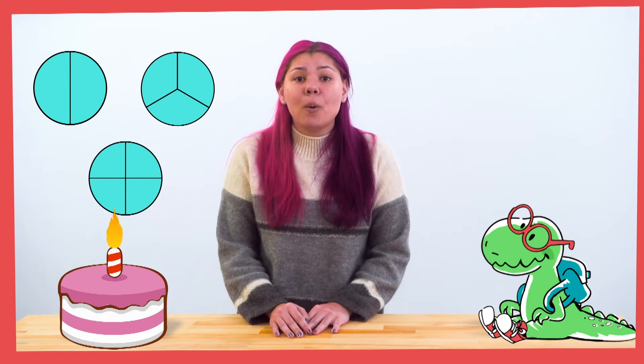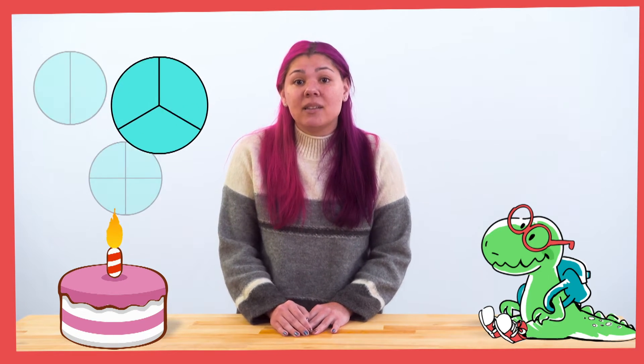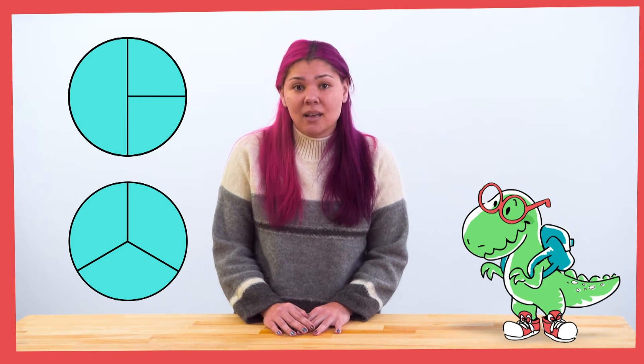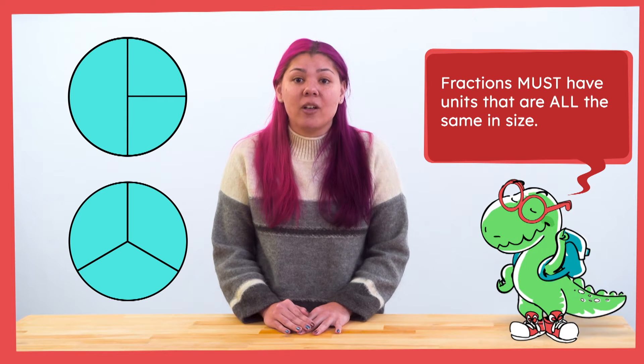Let's look at an example with some people sharing a cake to help us solve this dispute. When two people want to share one cake fairly, each person gets the exact same amount. That is something unique about fractions — when we say one-half or one-third or one-fourth, each part of the whole must be the same size, meaning we have equal parts. These are thirds because each part is the same size. These are not thirds because all parts are not the same size. Fractions must have units that are all the same in size.